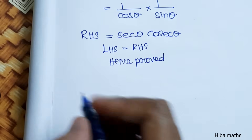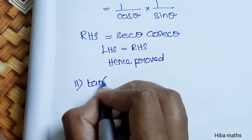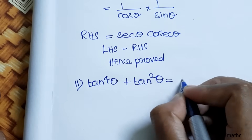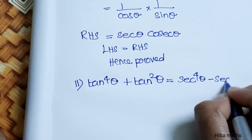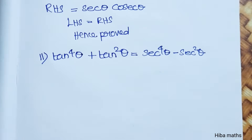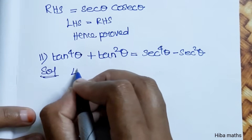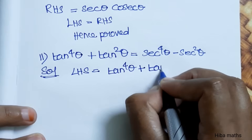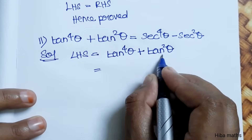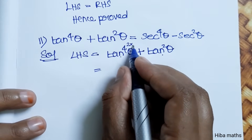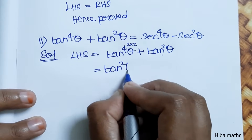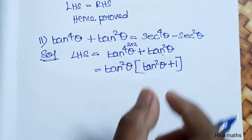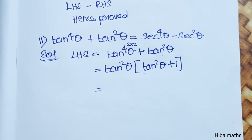Let's take the second part. Second subdivision: tan⁴θ + tan²θ = sec⁴θ - sec²θ. Let's start with the LHS, which equals tan⁴θ + tan²θ.